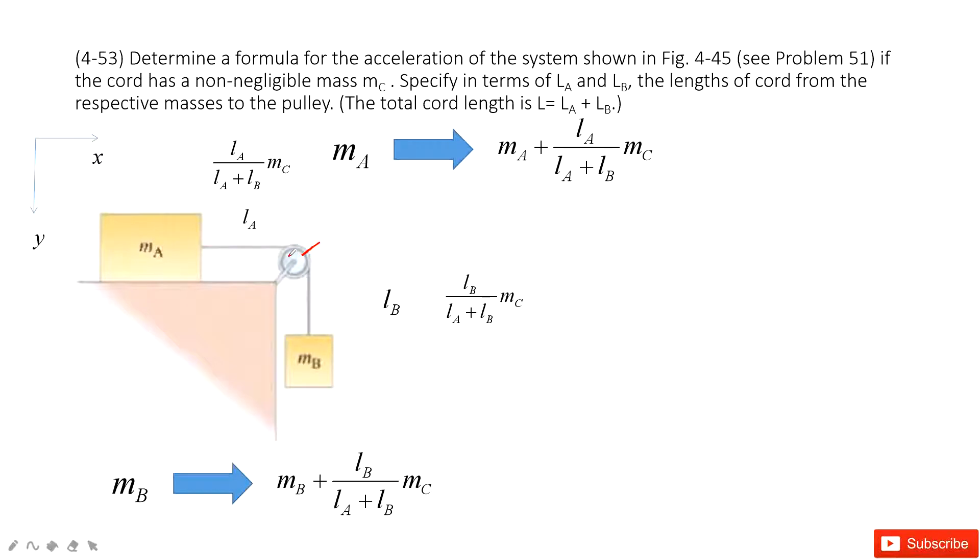And this mass is uniformly distributed on the cable. Therefore, the mass for this part is just this term. Because the LB divided by the total length times MC is the mass of this part. And then the mass for this part is just this fraction: LA divided by the total length times the mass C.